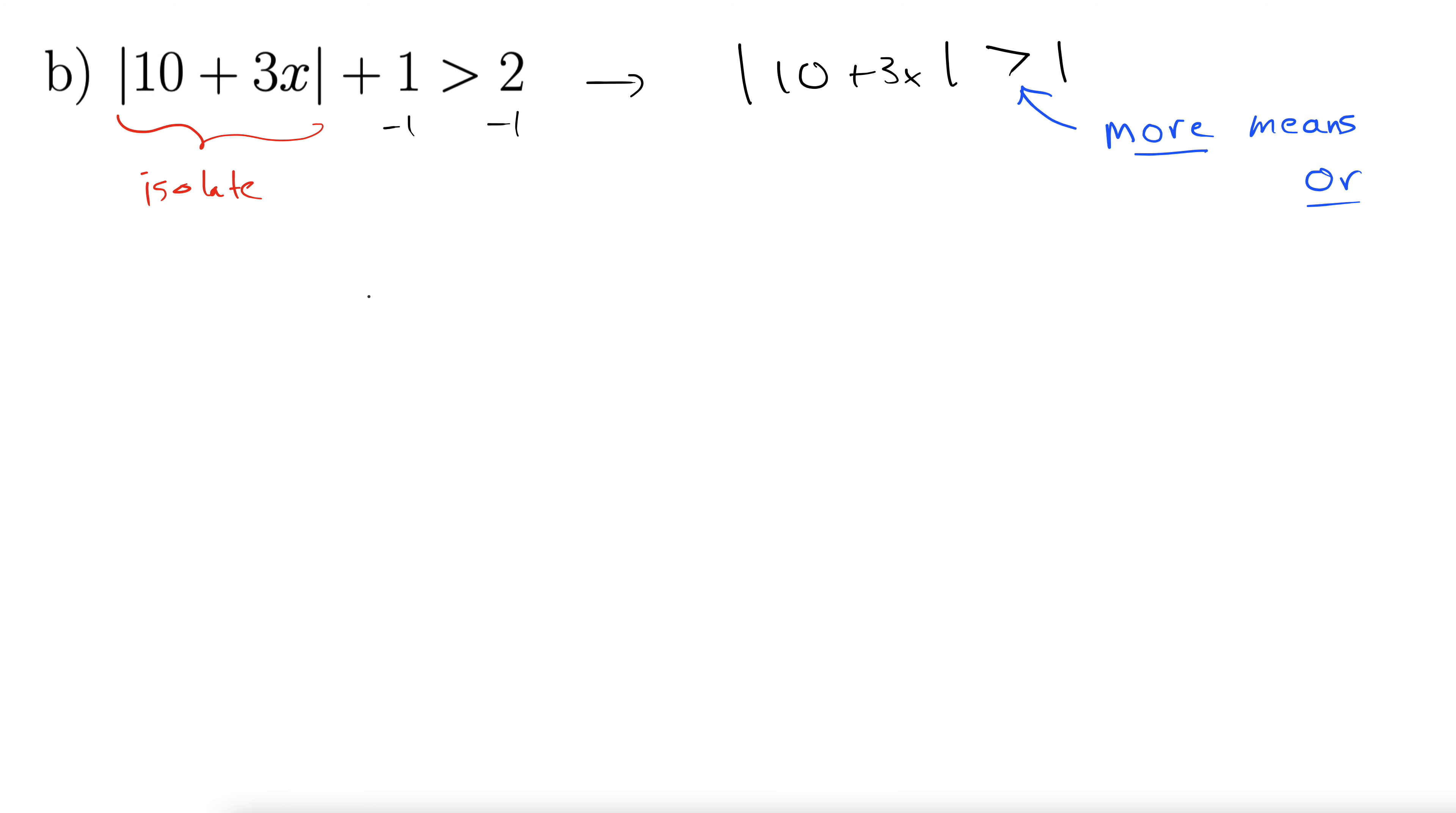Okay, so what I mean by more means or is this. We first do, just drop the absolute value. 10 plus 3x is greater than 1 or 10 plus 3x less than negative 1. Okay, so I just rewrote 10 plus 3x and then I changed the direction of the inequality and I added on a negative.